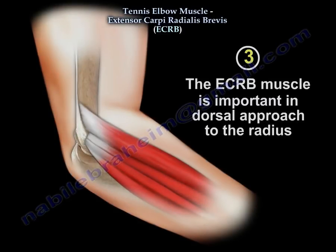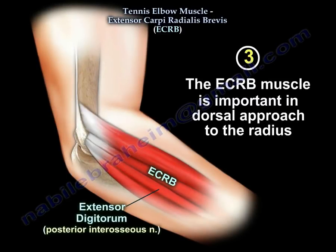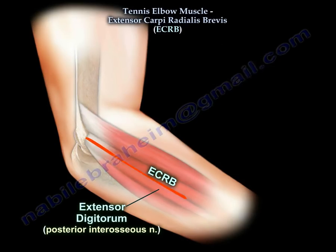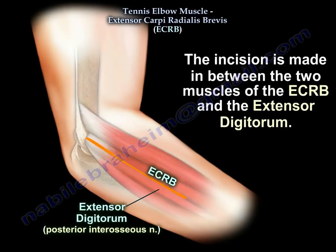Number 3: the extensor carboidialis previs muscle is important in the dorsal approach to the radius. The Thompson dorsal approach to the proximal radius may be used for exposure of the posterior aspect of the radial shaft. The incision is made in between the two muscles of the extensor carboidialis previs and the extensor digitorum.